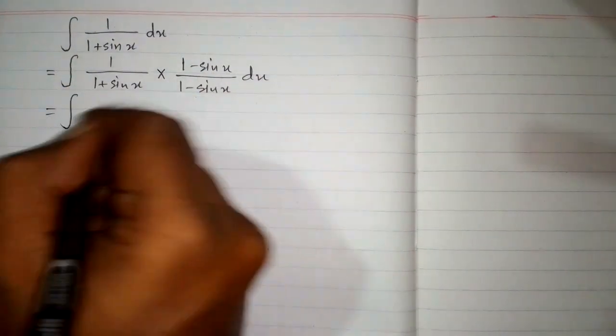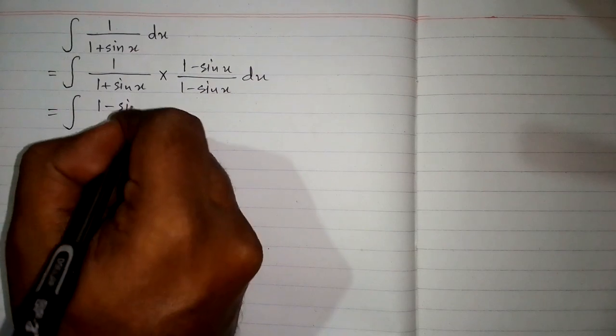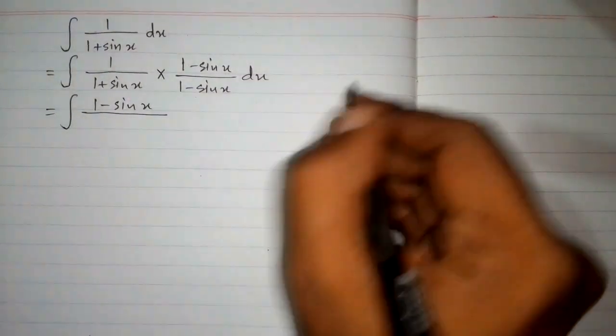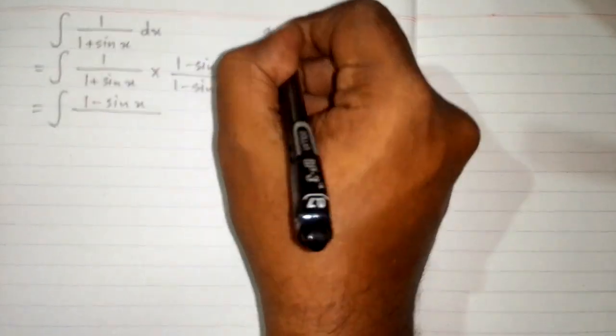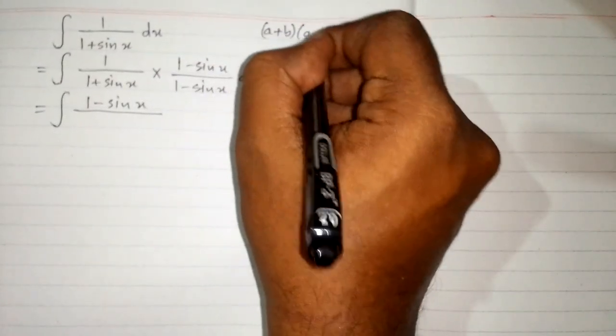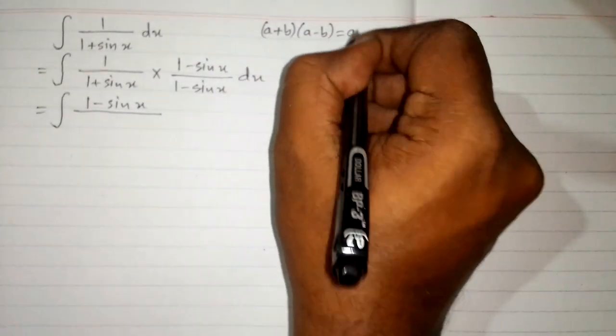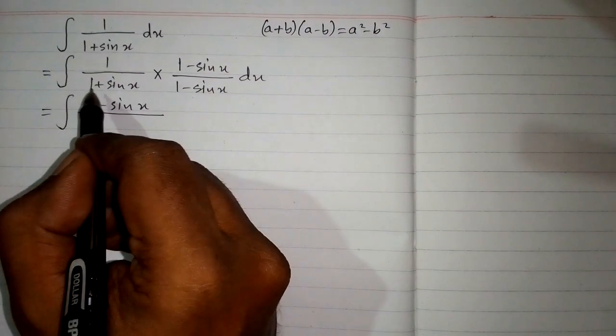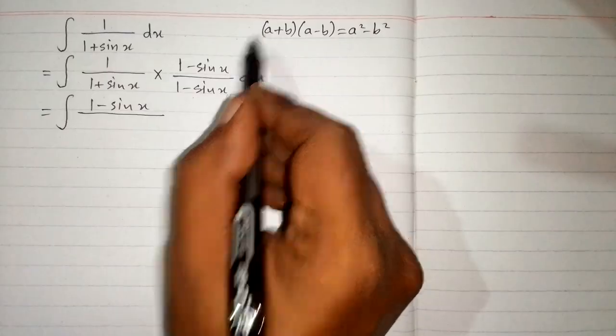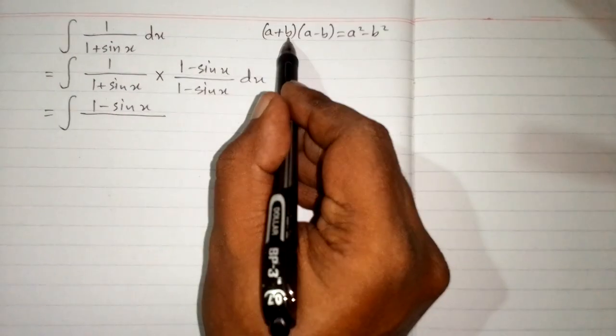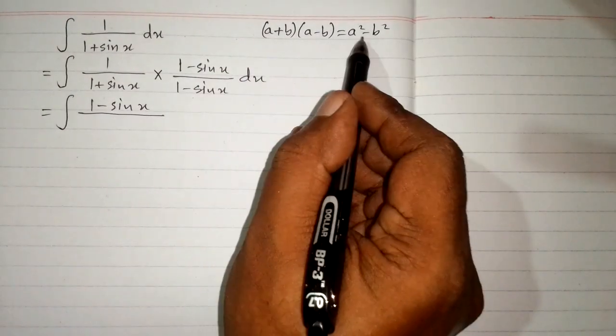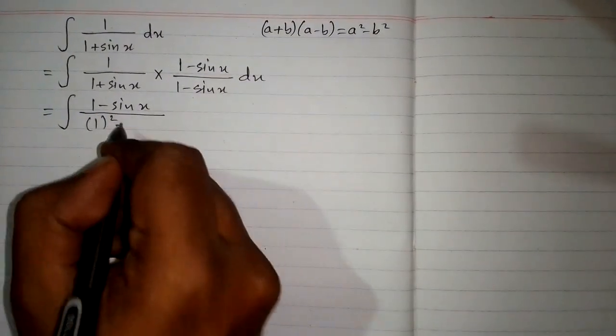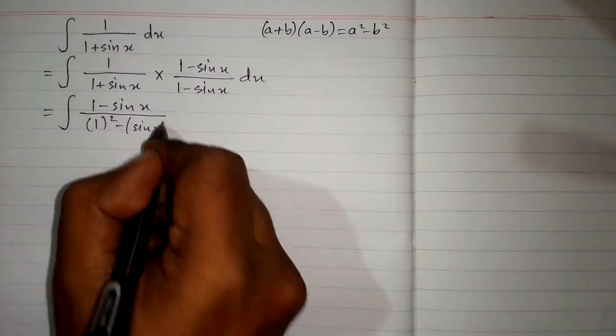So 1 multiplied by 1 minus sin x is 1 minus sin x. Here we will apply the formula a plus b times a minus b equals a square minus b square. We have 1 in place of a and sin x in place of b. So we get 1 square minus sin x square.